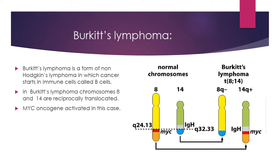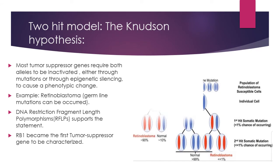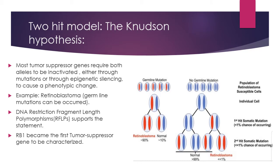The two-hit model is very important, and this hypothesis was proposed by Knudson. Most tumor suppressor genes require both alleles to be inactivated — either through mutations or through epigenetic silencing — to cause phenotypical changes. If one mutation happens in one allele, it cannot form cancer alone. If both alleles are affected or mutated, this can cause cancer formation. It is called the two-hit hypothesis because two mutations are occurring.